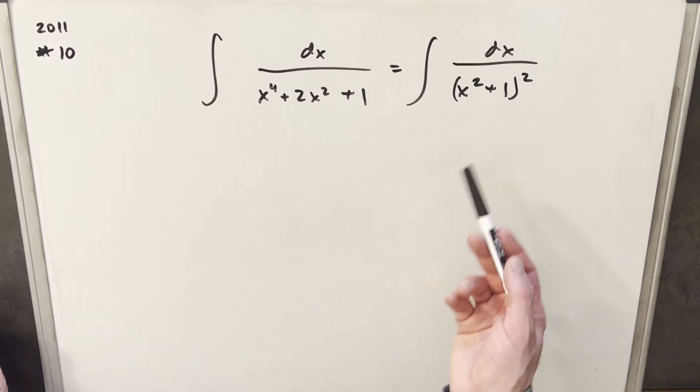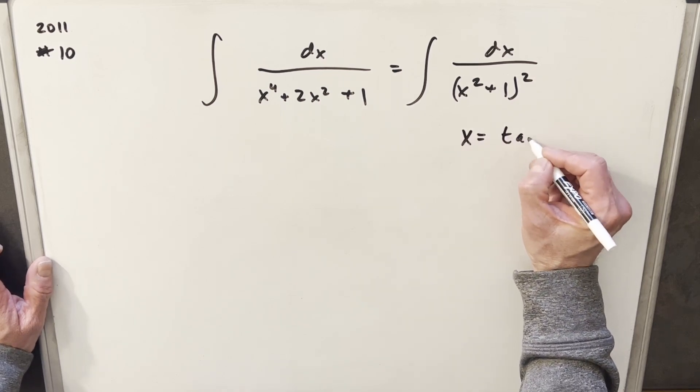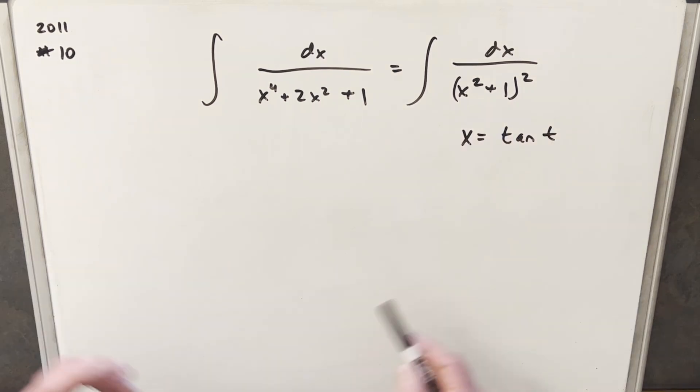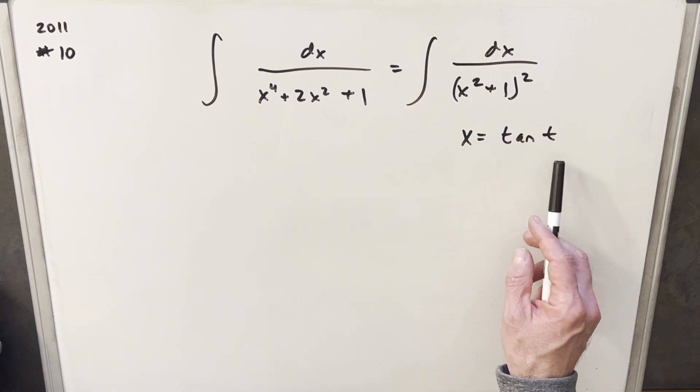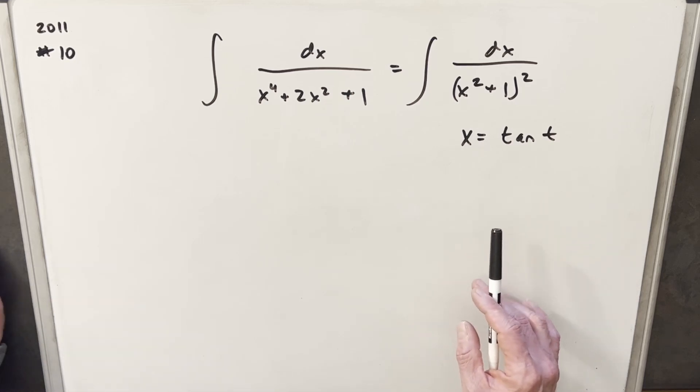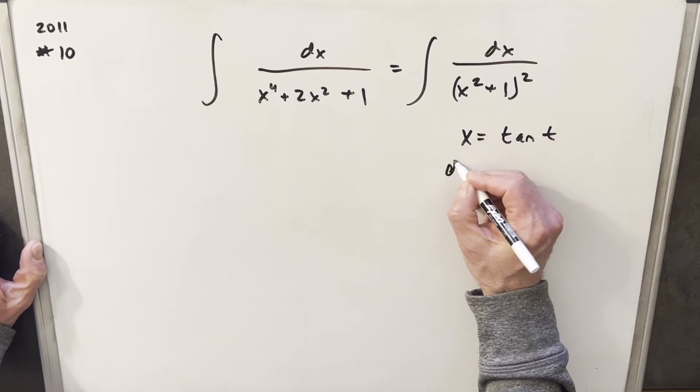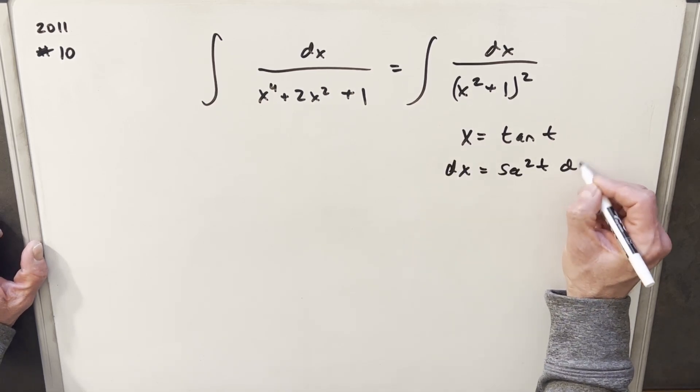Now, we could try different things from here, but what you'll notice is this is in pretty good shape for a trig substitution. If I just make my substitution and call x equal tan t, one quick note, most people will use theta instead of t. The reason I use t instead of theta is because my handwriting was never good, and I always felt like my theta would look like a 0. Anyway, let's get back. So we'll take our derivative. So dx here is going to be secant squared t dt.